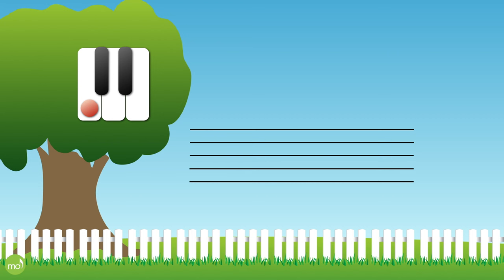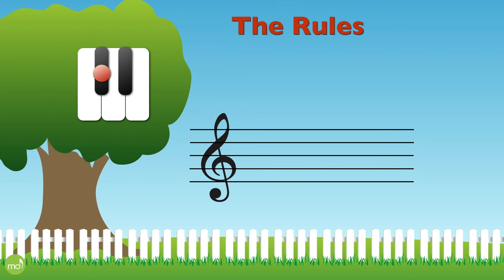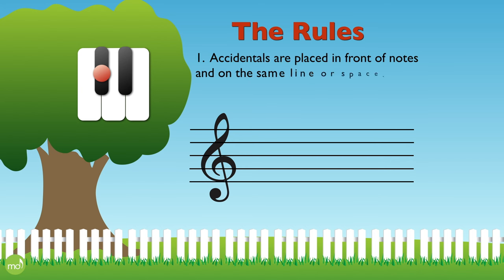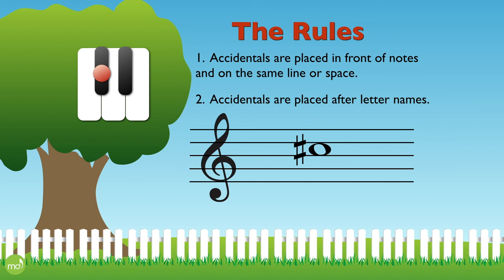Here's a C, and we'll move it up a semitone to C sharp. Let's draw it in the treble clef. But first you need to know a couple rules. Number one, accidentals are placed in front of notes and on the same line or space. And number two, accidentals are placed after the letter name.